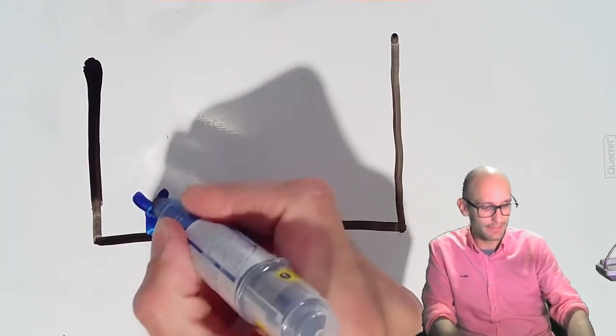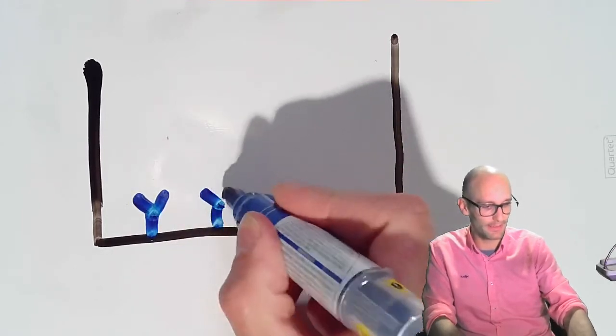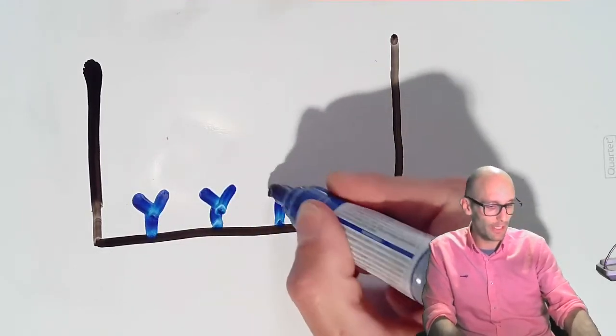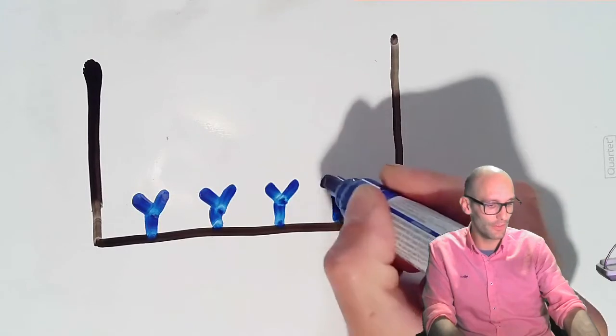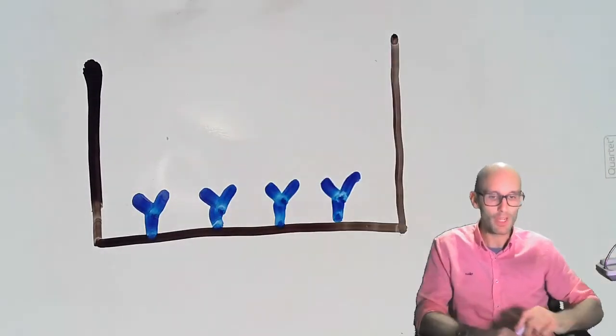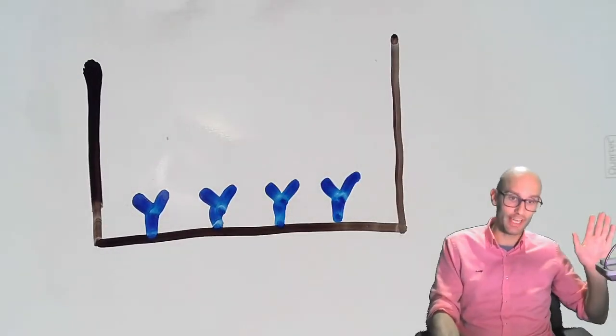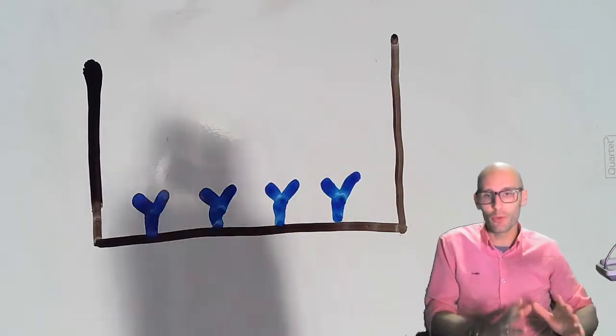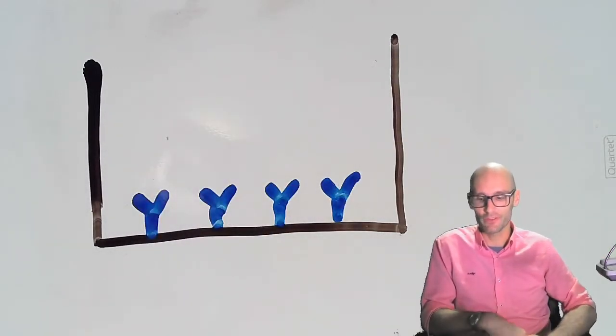Now because the plastic is adherent, remember the plastic is adherent, the antibodies will stick to the surface of this plastic. We'll come back the next day, we'll wash it out, and so now we've got a well that just contains rabbit antibodies for IL-1.